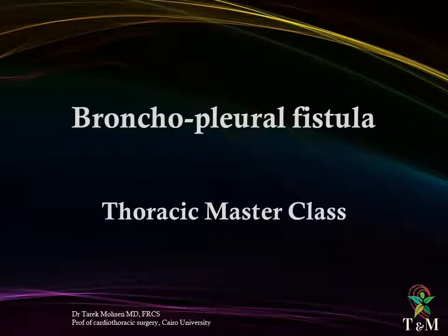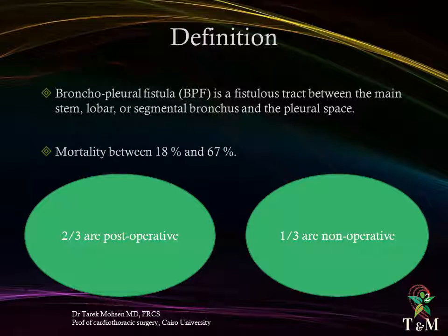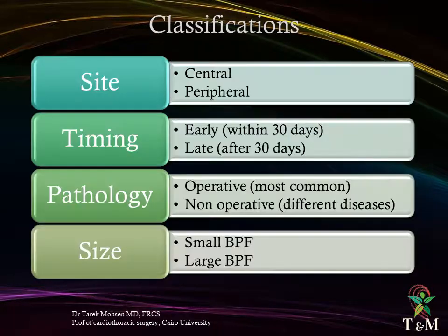Bronchopleural fistula — thoracic masterclass. In this lecture, the pathology, clinical condition, and management of bronchopleural fistula is revisited. Bronchopleural fistula is a fistulous tract between the main stem, lobar, or segmental bronchus and the pleural space. The mortality ranges between 18% and 67%. Two-thirds of cases are usually post-operative and one-third are due to non-operative causes.